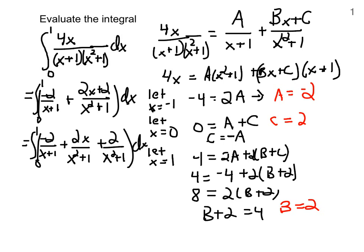Both the first and the last one, we can immediately find. What function has negative 2 over x plus 1 as its derivative? It's negative 2, the natural log of x plus 1. What function has 2 over x squared plus 1 as its derivative? It's 2 times the arc tangent of x. But this guy here is not immediate. We don't know that one right away.